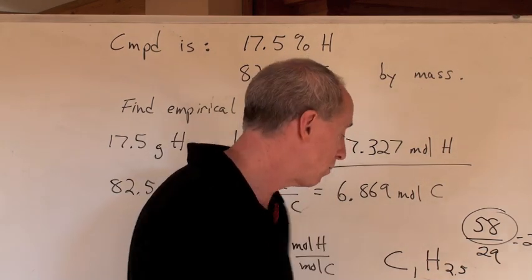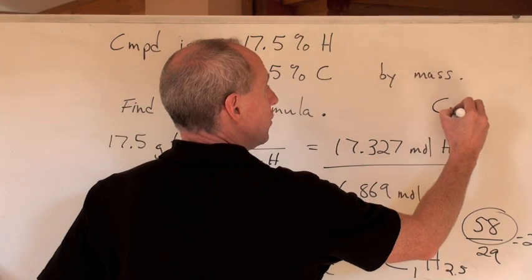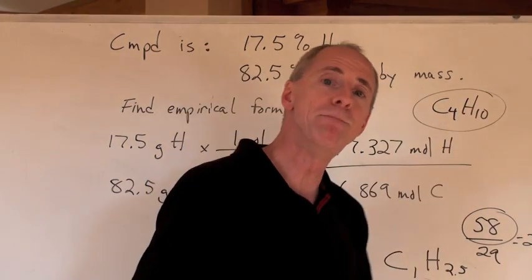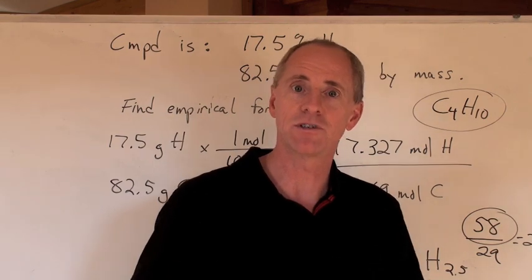So the molecular formula for C2H5 really is C4H10, and that's a molecule called butane. Check the organic chemistry lesson, it's all there.